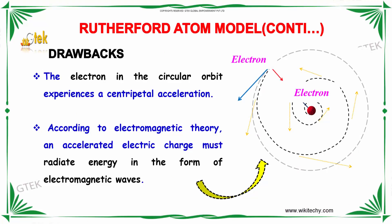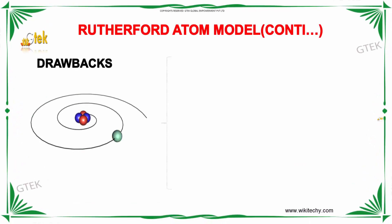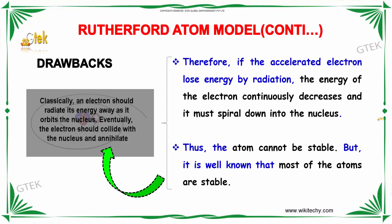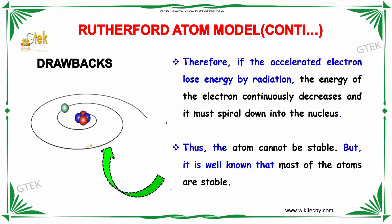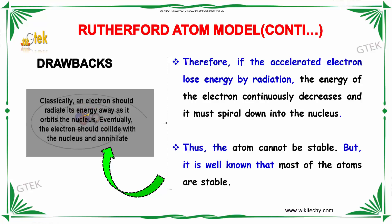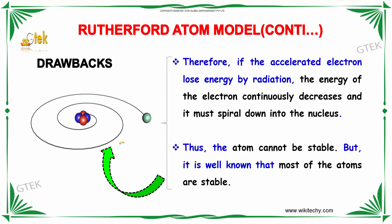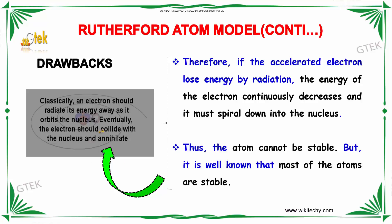Talking about the drawbacks of the Rutherford atom model: the electron in a circular orbit experiences a centripetal acceleration. According to electromagnetic theory, an accelerated electric charge must radiate energy in the form of electromagnetic waves. If the accelerated electron loses energy by radiation, the energy of the electron continuously decreases and it must spiral down into the nucleus. Thus, the atom cannot be stable, but it is well known that most atoms are stable. This is the major drawback of the Rutherford atom model.